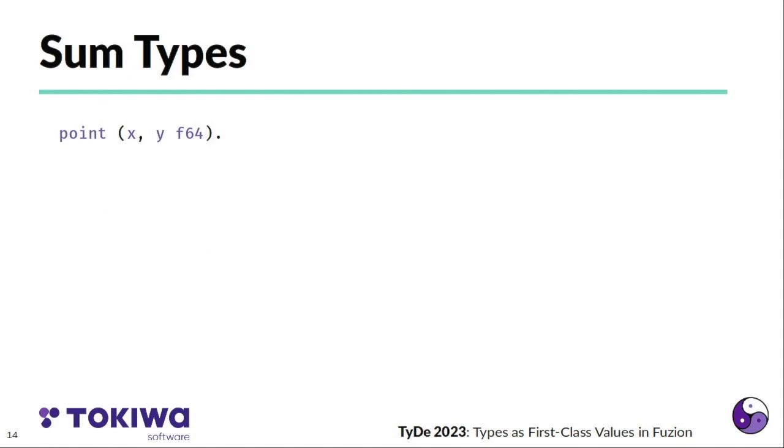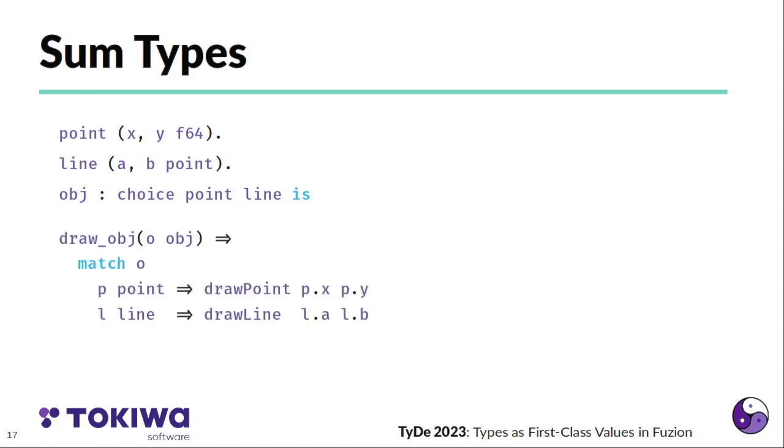Going back to our point, I add a second product type, which is a line, and I can now define an object, which is a choice of either a point or a line. So we have a sum type, a tagged union type object here that could be either a point or a line. We can now define a feature to draw an object and match on the object parameter to distinguish whether it's a point or a line, and then draw that.